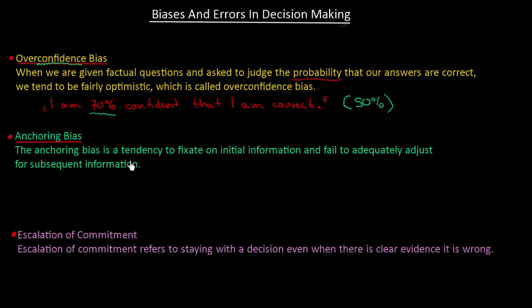The anchoring bias is a tendency to fixate on initial information and fail to adequately adjust to subsequent information. This is a pretty interesting and useful one.